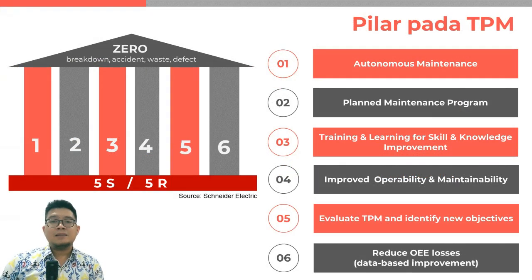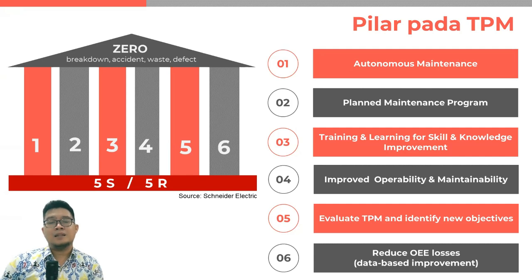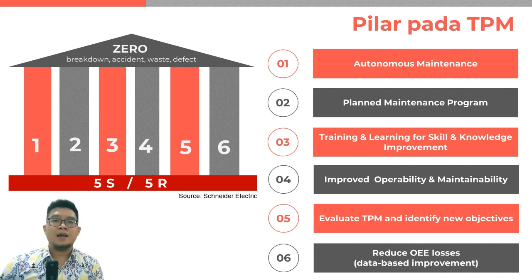Dalam penerapan TPM ini terdapat 6 buah pilar, di mana pada 6 pilar ini terdapat fondasi utama yang perlu dipertahankan, yaitu adalah 5S dan 5R. Oleh karena itu, pada industri sebaiknya sudah menerapkan 5S atau 5R secara berkelanjutan baru nanti bisa menerapkan TPM melalui 6 pilar ini. Dari penerapan TPM, tujuannya adalah 0 breakdown, 0 accident, 0 waste, dan 0 defect.